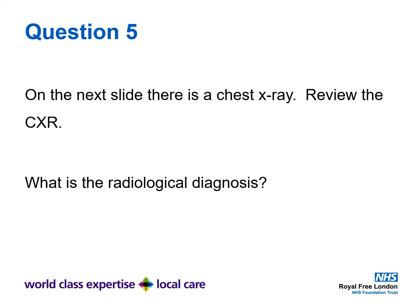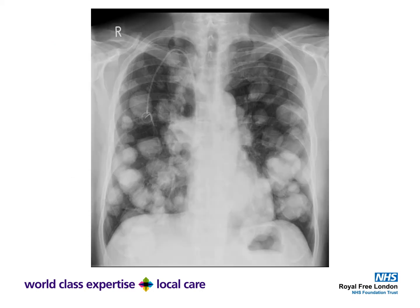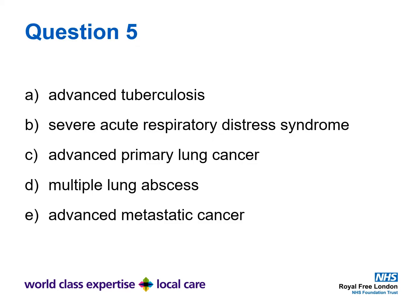Question 5. On the next slide there is a chest x-ray. I'd like you to review the chest x-ray and decide what is the radiological diagnosis. Pause the slides until you have decided on your diagnosis. Is the answer A: advanced tuberculosis, B: severe acute respiratory distress syndrome, C: advanced primary lung cancer, D: multiple lung abscess, or E: advanced metastatic cancer?